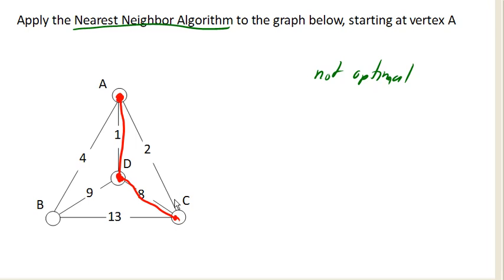So now my options are either, well, I really only have one option, because I don't want to go back to the beginning yet, because I need to visit every vertex. So my only option now is to go over here, and then to get back to the start, my only option is to go that way. And we ended up with the circuit ADCBA.